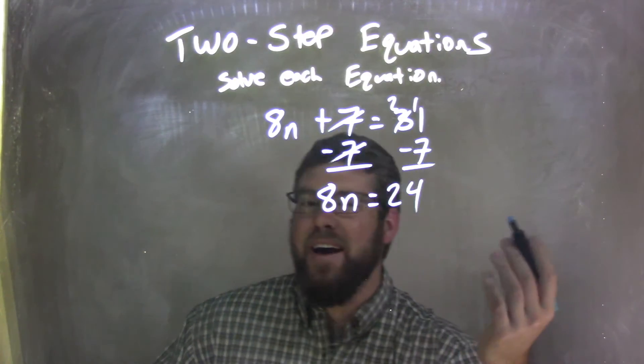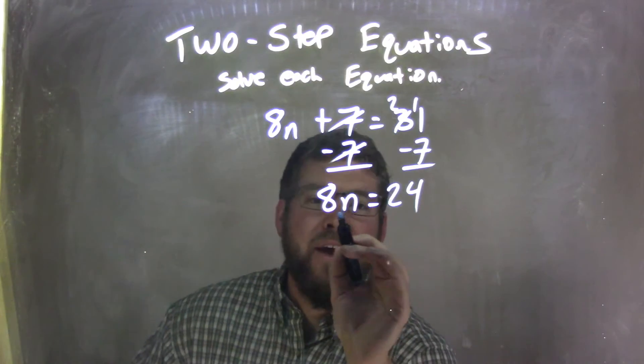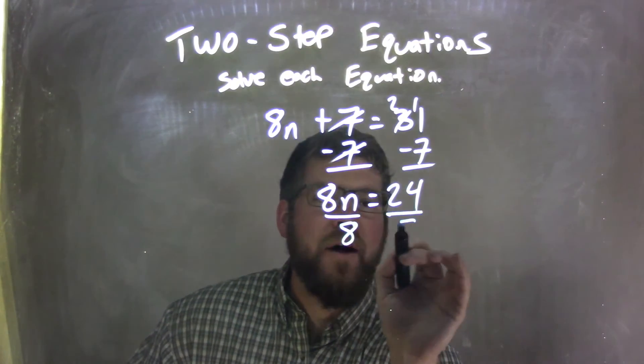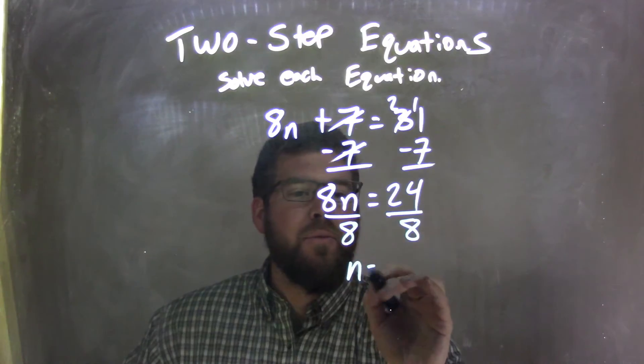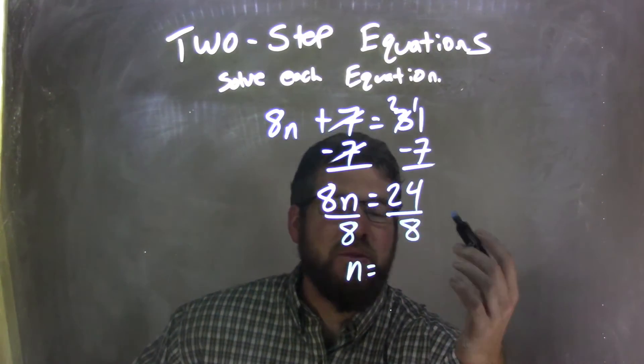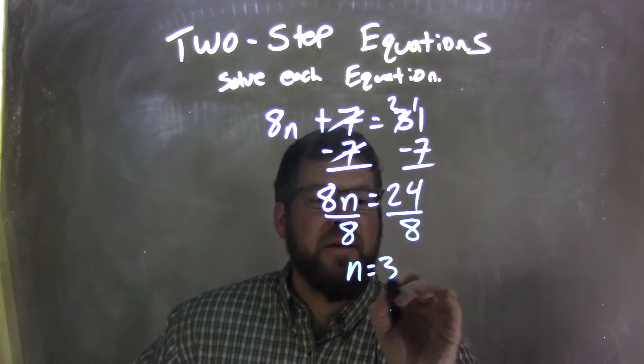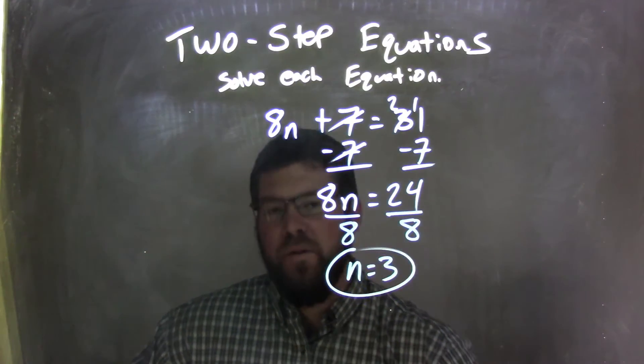Anyway, 8n equals 24. And now, I see there's multiplication there with 8 and the n. Opposite to that is division. I'm going to divide by 8. And I'm left with, well, whatever 24 divided by 8 is. Well, 24 divided by 8 is 3. And so, n equals 3 is my final answer.